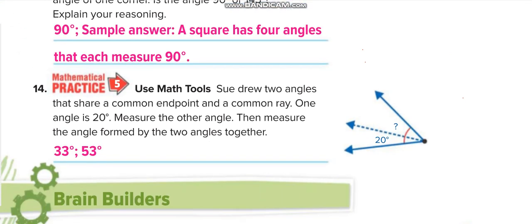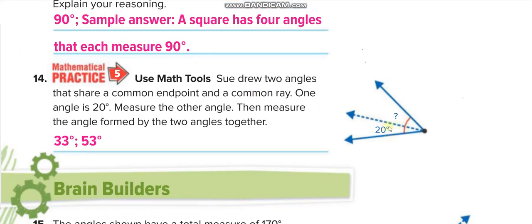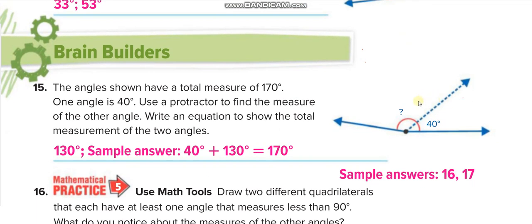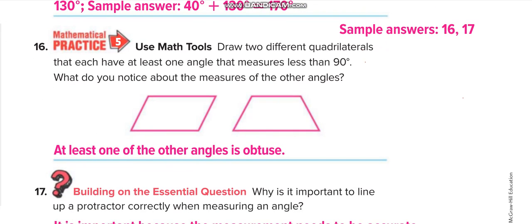Here they have found part of an angle — 20 degrees — and you need to find the remaining part. Put the protractor on this point with this line on zero, and you will find the total angle measures 53 degrees. Subtract 20 degrees to find the remaining part: 53 minus 20 equals 33 degrees. For the next one, the total angle is 170 degrees; subtract 40 degrees to get the remaining part, which is 130 degrees.